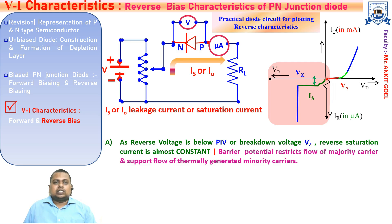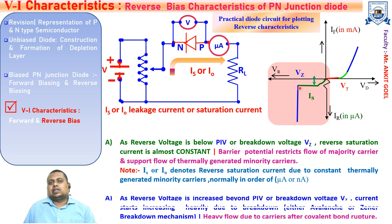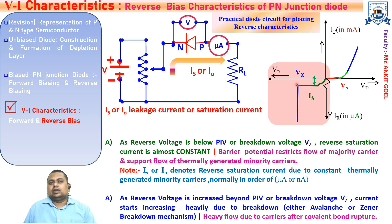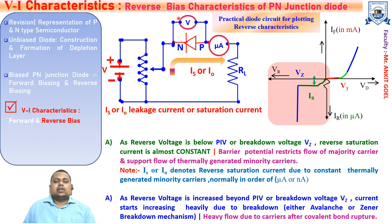Below the breakdown voltage we have the saturation current behavior. But once the voltage exceeds the breakdown voltage, the current suddenly and abruptly rises due to permanent breakdown — called the Zener breakdown or avalanche breakdown. This is due to the very heavy flow of charge carriers caused by the breaking of covalent bonds due to the high electric field and due to collision. We get a sudden rise in current after the breakdown voltage. This is all about the VI characteristics.